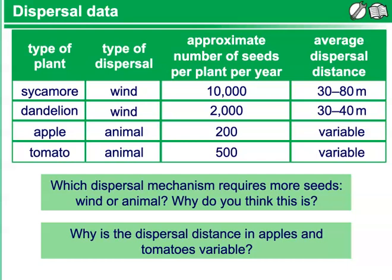Consider digging into plants, plant seed production, and dispersal to see if there are any trends. You could choose a variety of different plants and count how many seeds are present in each, then use the information to analyze whether wind or animal dispersed plants produce more seeds.